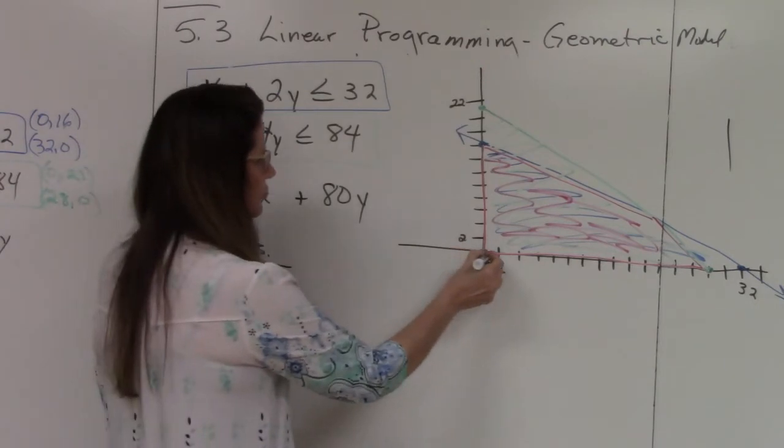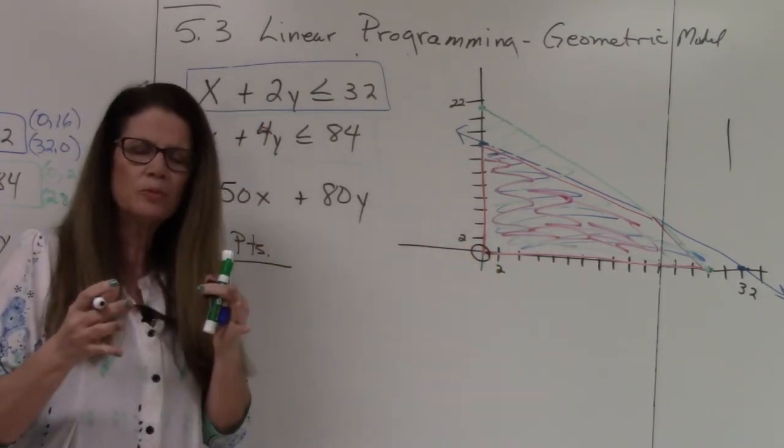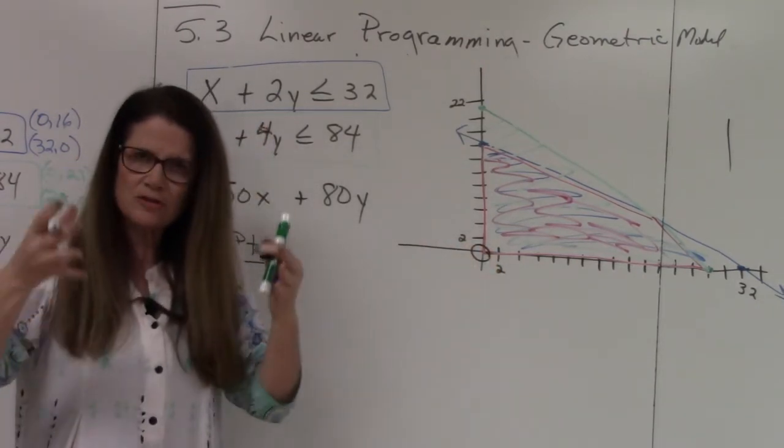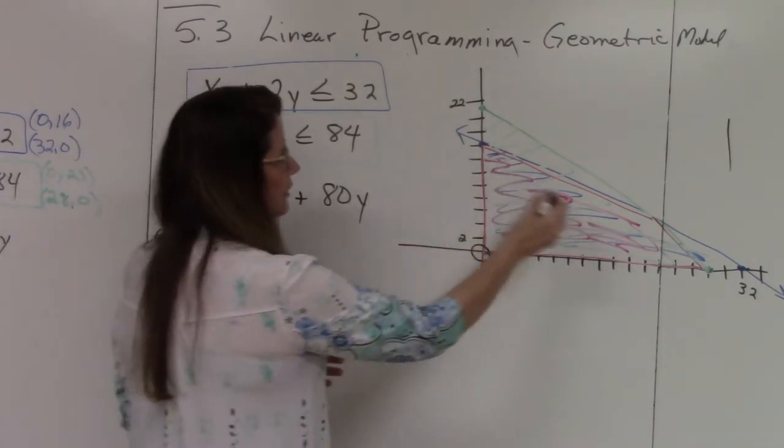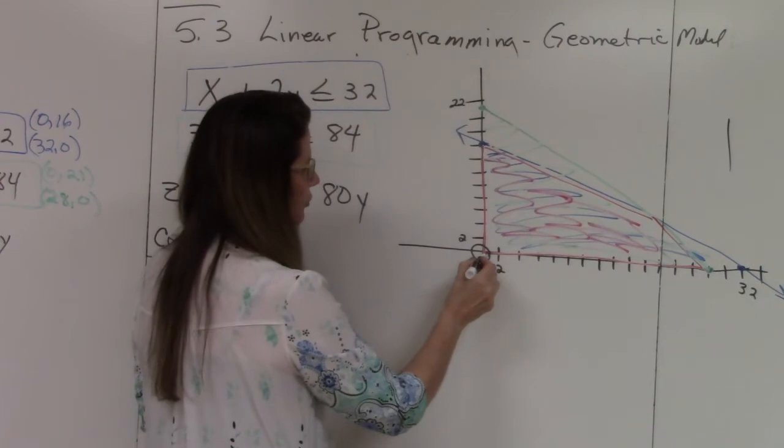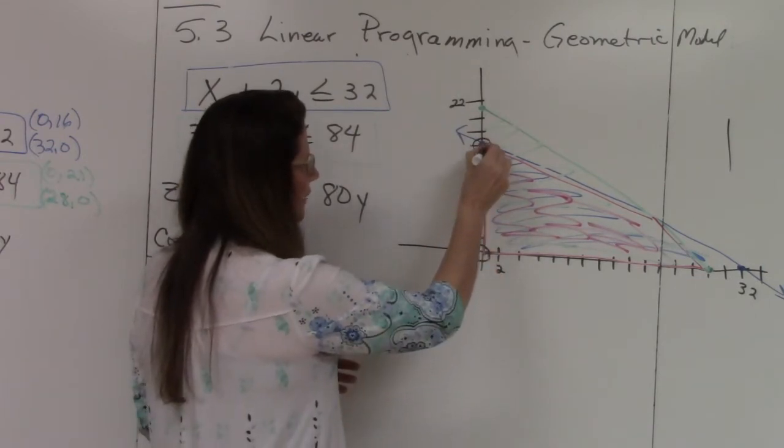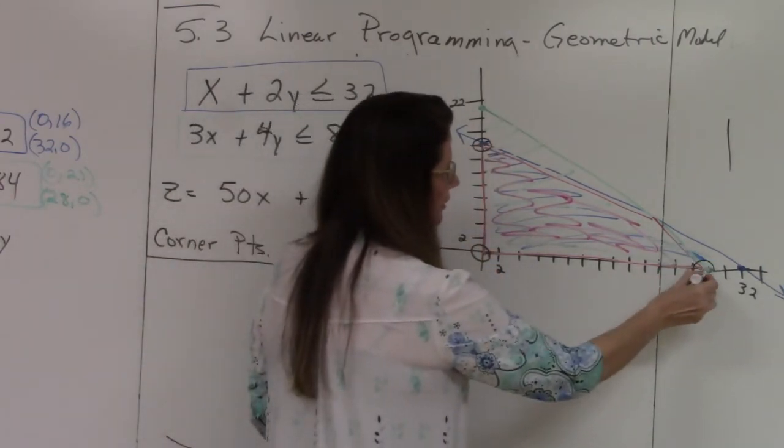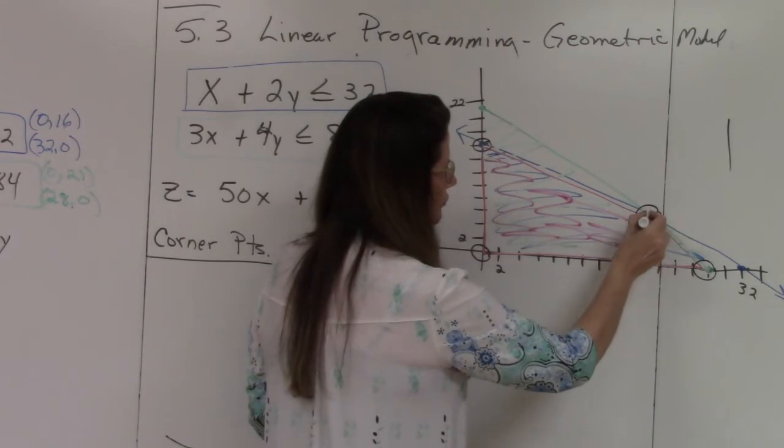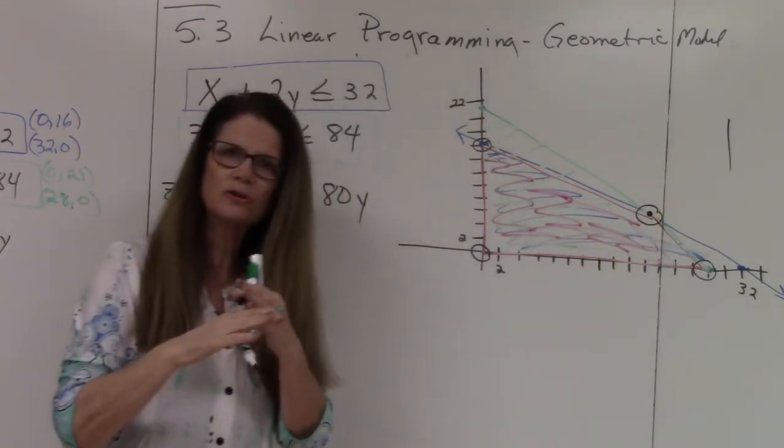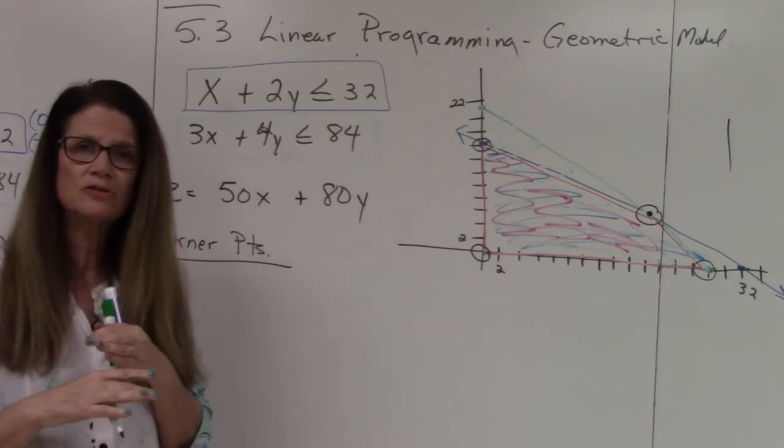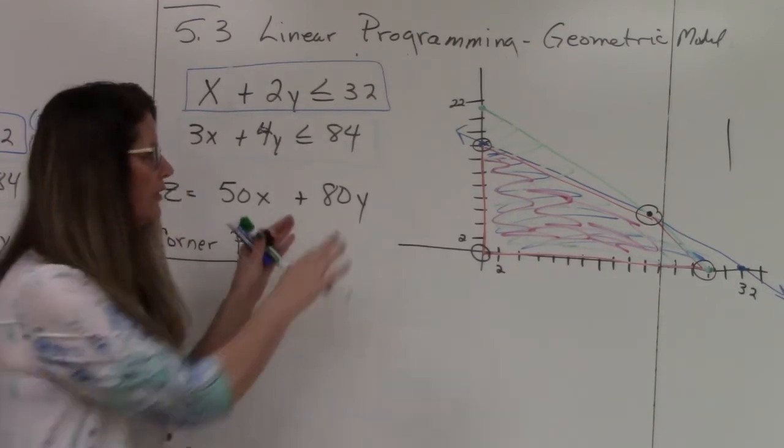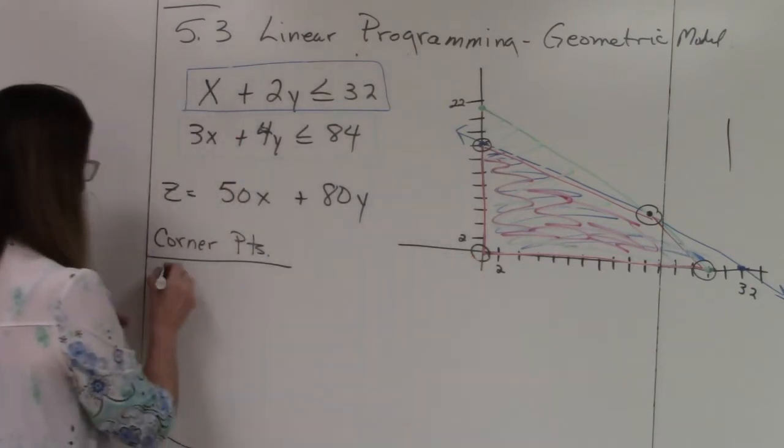So that's why it's important to find the corner points. So obviously here's a corner point. And when I say corner point, I mean only the surrounding corners of the feasible region. So if this is my feasible region, I have a corner point here, here, here, and here. So right there is a corner point. That's where the two, the blue and the green line cross. So we have to find the values or the ordered pair for that one. The other three are already done for us.